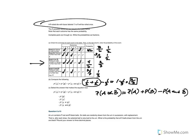Next example: an urn contains nine red and eight black balls. Six balls are randomly drawn from the urn in succession with replacement, which means that after you draw a ball you put it back. What is the probability that all six balls drawn from the urn are black?